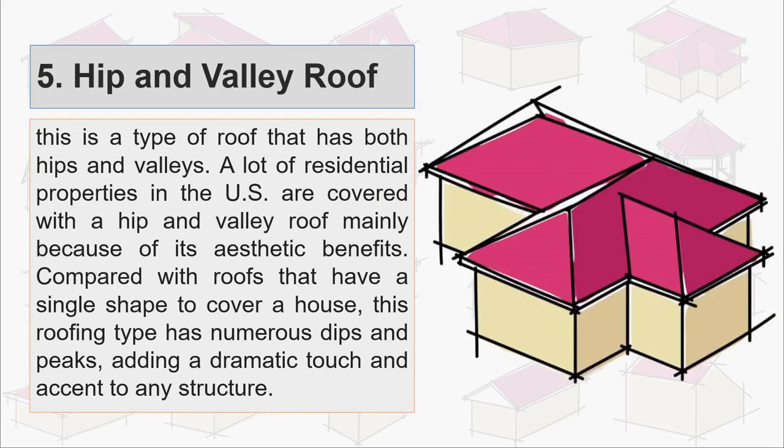Fifth is hip and valley roof. This is a type of roof that has both hips and valleys. A lot of residential properties in the US are covered with a hip and valley roof mainly because of its aesthetic benefits, and compared with roofs that have a single shape to cover a house, this roofing type has numerous dips and peaks adding a dramatic touch and accent to any structure.